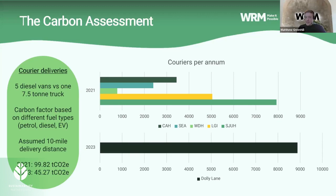These calculations, like any carbon calculations, are based on some assumptions. We've taken a 10-mile delivery distance as an assumption, and used an averaged carbon factor based on a mixture of petrol, diesel, and EV supplier vehicles, which is the current situation regarding these supplier deliveries.